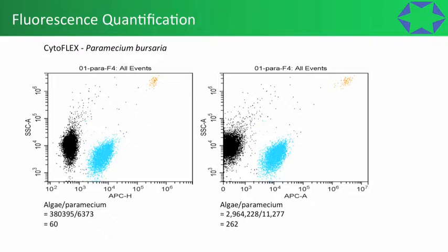When we took the height data and divided the fluorescent intensity of the paramecium containing algae by that of the free algae, we got about 60 — and there are clearly more than 60 in that paramecium. But when we took the log height area data we were closer to the number we could visibly see in the confocal image, giving us confidence that we were actually quantifying the number of algal symbionts. This enabled ecologists to put hundreds of samples through the CytoFLEX using the plate loader — about 400 samples a day.